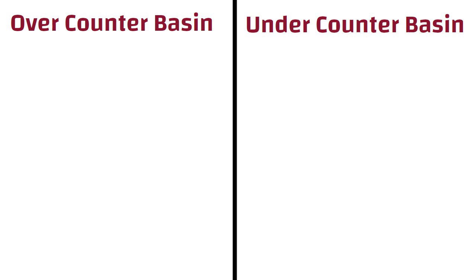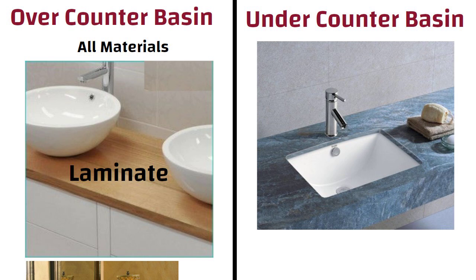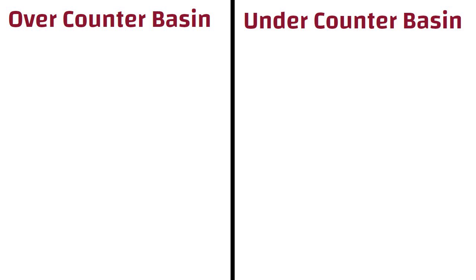Counter top material. Over counter basins can be installed on all types of counter top materials, including laminate, tile, solid surface, and all composite and natural stone. Whereas the under counter basin can only be used under a solid counter top such as stone.